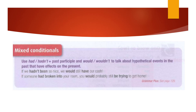Use had or hadn't plus past participle and would or wouldn't to talk about hypothetical events in the past that have effects on the present. For example: if we hadn't been so nice, we would still have our cash. If someone had broken into your room, you would probably still be trying to get home.